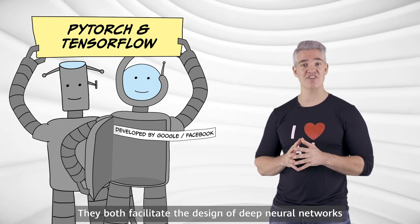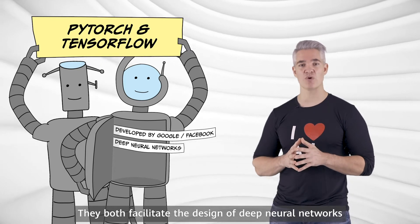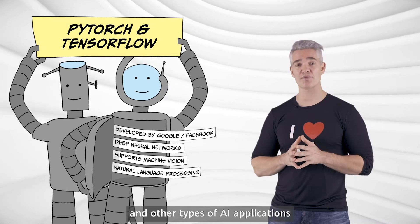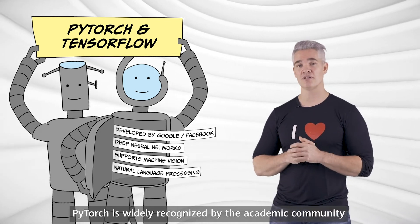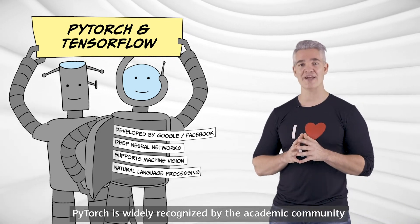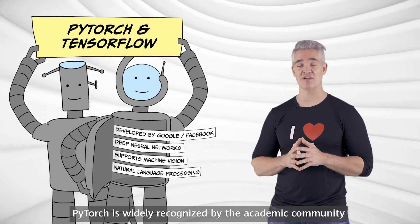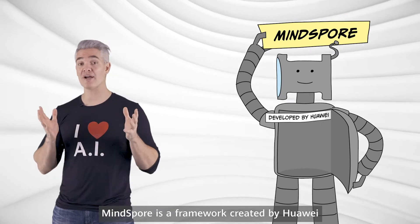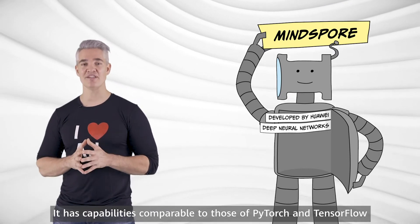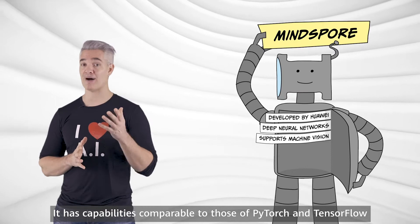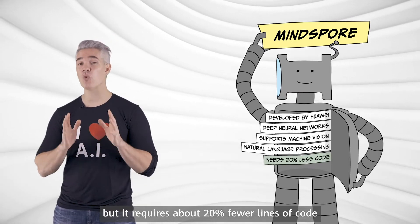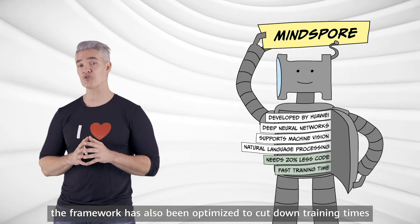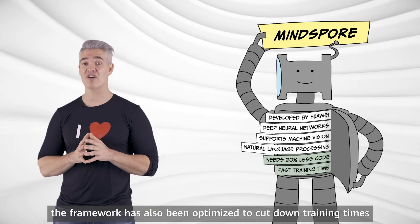They both facilitate the design of deep neural networks, supporting machine vision, natural language processing, and other types of AI applications. PyTorch is widely recognized by the academic community for being easier to use. MindSpore is a framework created by Huawei. It has capabilities comparable to those of PyTorch and TensorFlow, but it requires about 20% fewer lines of code. The framework has also been optimized to cut down training times.